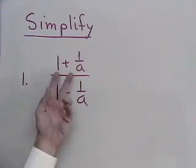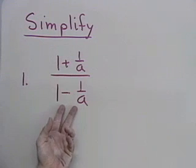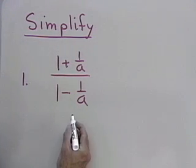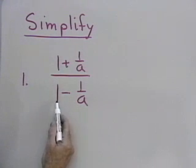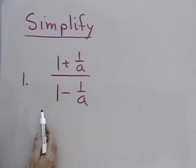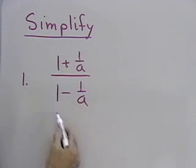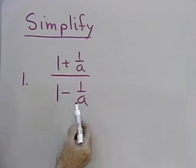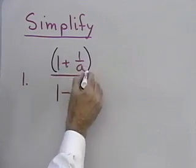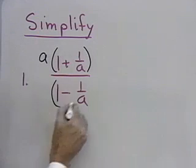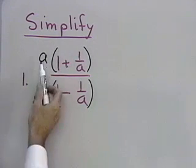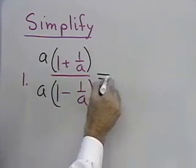The first one is 1 plus 1 over a, divided by 1 minus 1 over a. One way to simplify a complex fraction is to look at the denominators of all the small fractions and multiply the numerator and denominator of the complex fraction by that least common denominator. I see the least common denominator is a, so I'm going to multiply both the numerator and denominator by a — I haven't changed the value.